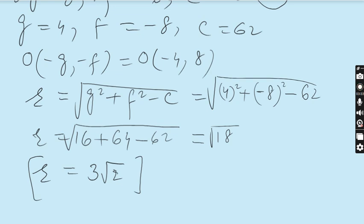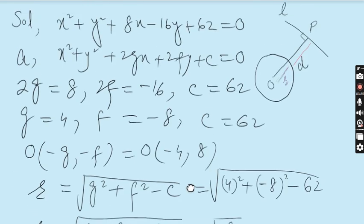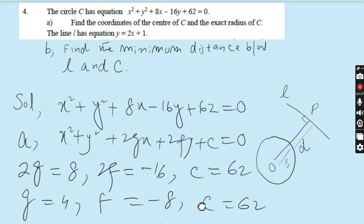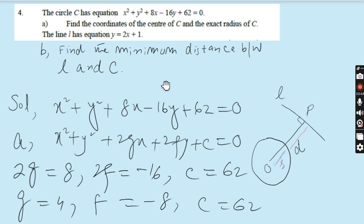Part A is very easy and we have done this type of question — finding the centre and radius — many times. Now I want to focus on Part B. The line L has equation y = 2x + 1, and Part B asks us to find the minimum distance between line L and circle C.